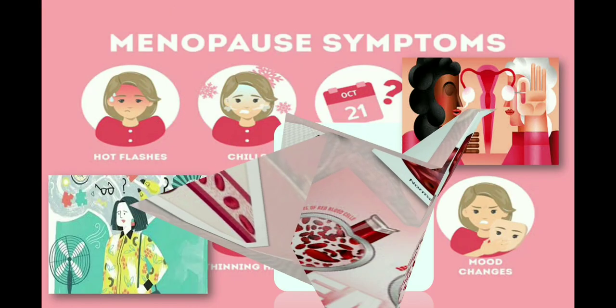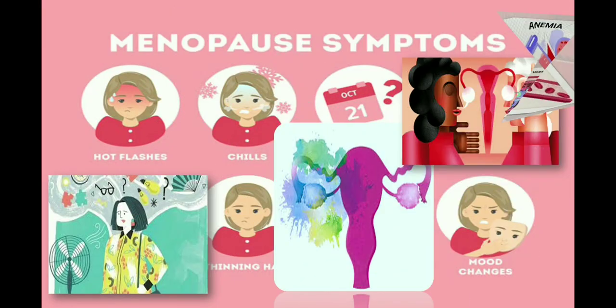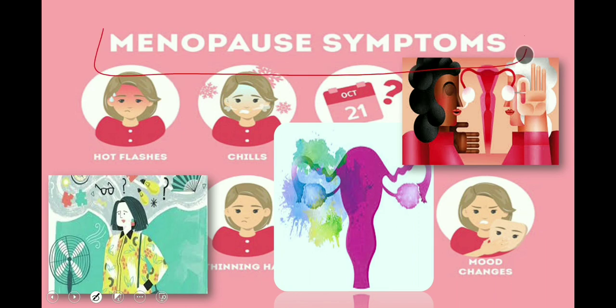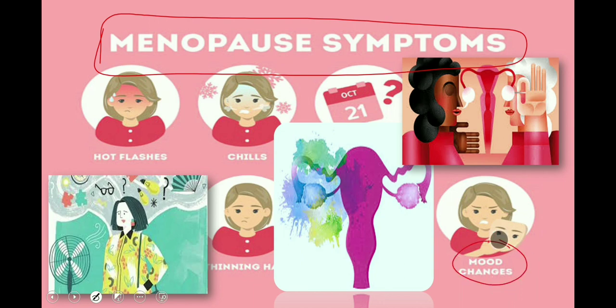While taking the history from a patient with abnormal bleeding, we also have to ask about symptoms related to menopause, because although she might not be in the menopausal age group, some women may suffer from premature ovarian failure. Ask about irritability, mood swings, hot flushes, joint pain, sleep problems, and vaginal dryness.